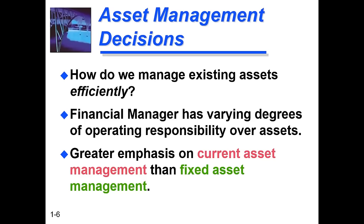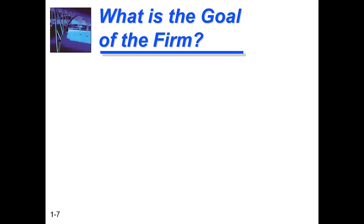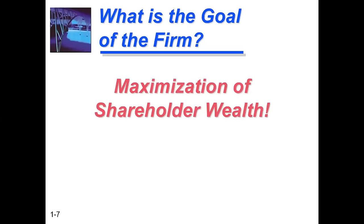So we have these three decisions: investment decision, financing decision, and asset management decision. These are the role of financial management. Now the basic purpose is we have to take all these decisions such that the goal of our firm is also determined. We need to see what is the goal of the firm. The goal of the firm is maximization of shareholders' wealth.